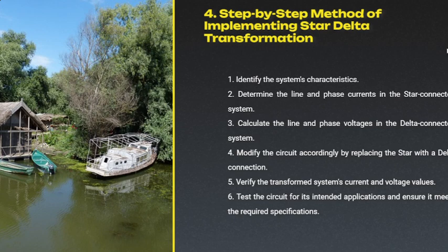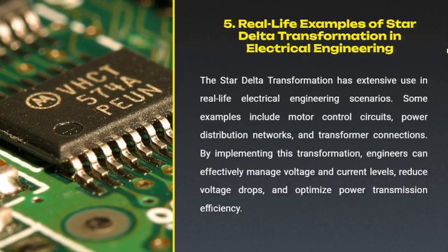We have to modify the circuit accordingly. If it is star, that has to be changed to delta — that is, the line and phase currents have to be converted into line and phase voltages, and the representations have to be replaced. At the same time, we have to verify the transformer system's lines, voltages, as well as the current. Star-delta transformations are majorly used in motor control circuits, power distribution circuits, and transformer connections.